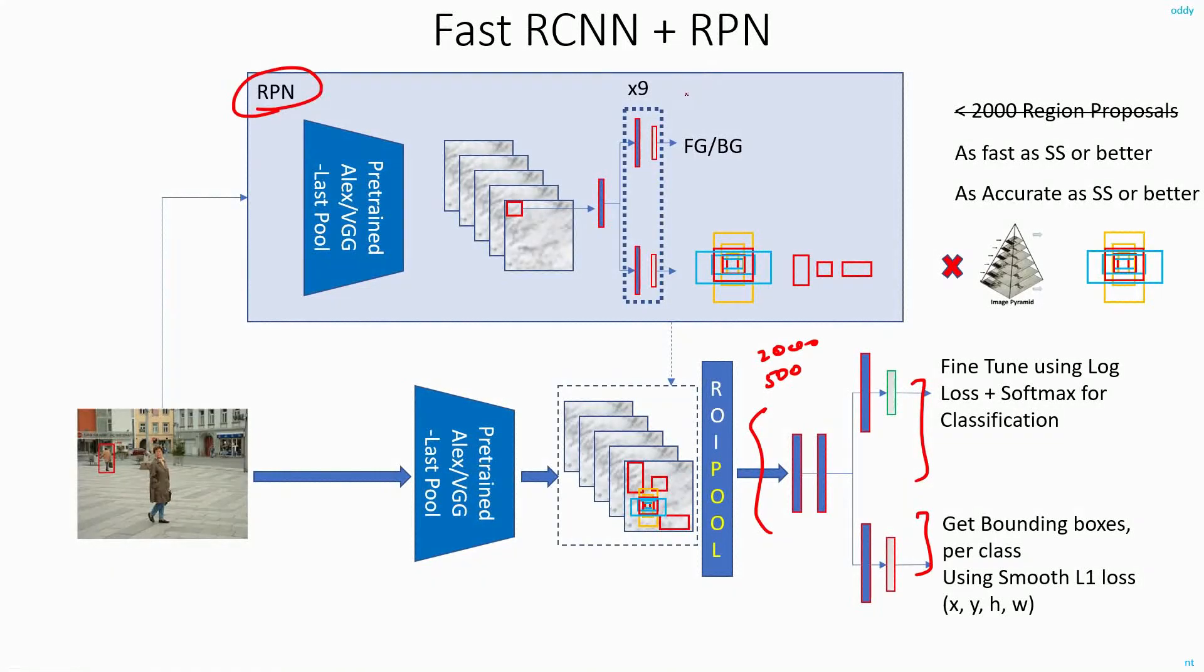So the design of the region proposal network will be modified in this way. For every bounding box regressor, I will also have the associated classifier which will just tell me whether the region of the image is foreground or background. And not only that, it will also give me a score. These nine bounding box regressors will give me the dimensions of the ROI proposals, and this one will tell whether it is foreground or background.